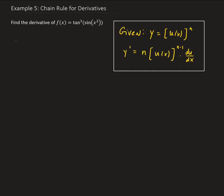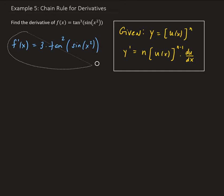So we have f prime of x. We're going to take care of the outside power first, so we bring down a three. That leaves us with tangent squared of sine x squared.